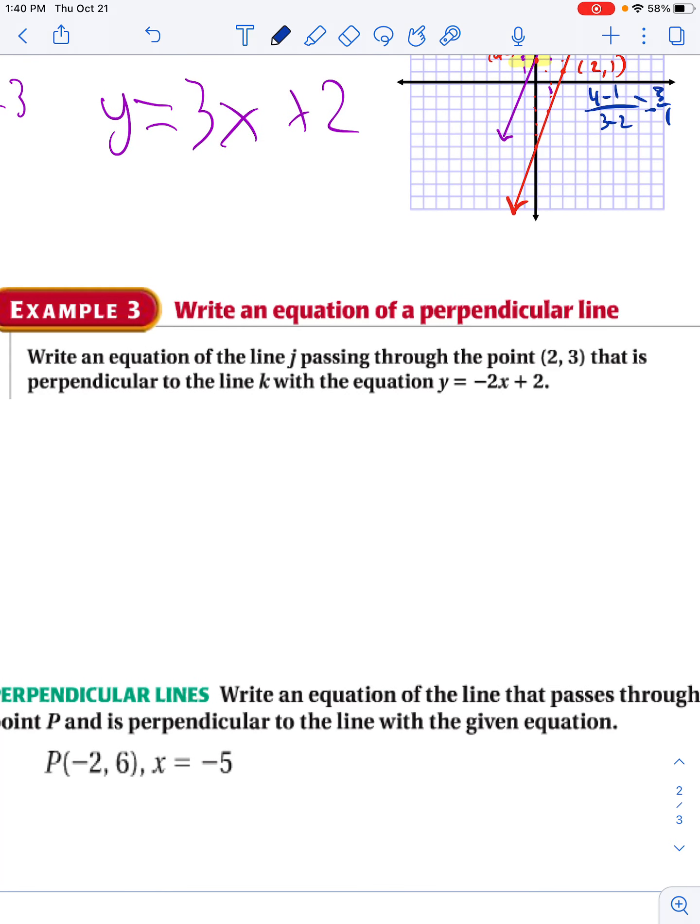Write an equation of the line j passing through the point 2, 3. That is, keyword, perpendicular. This means, quote, opposite reciprocal for my slope, okay? Slope is opposite reciprocal to the line k with the equation y equals negative 2x plus 2. So in this case, my original slope is negative 2.